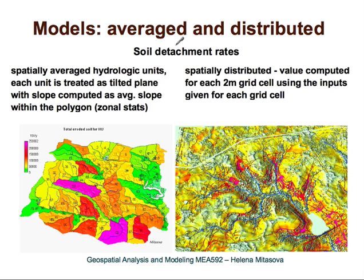Here is another example comparing averaged and distributed modeling. With spatially averaged results reported for hydrologic units — in this case small watersheds — we just provide an average erosion value for the entire watershed. This is useful for regional planning and targeting certain watersheds for conservation measures. But once we want to design exactly where to place those conservation measures, we need spatially distributed modeling, which provides a very detailed but also complex spatial pattern of erosion.